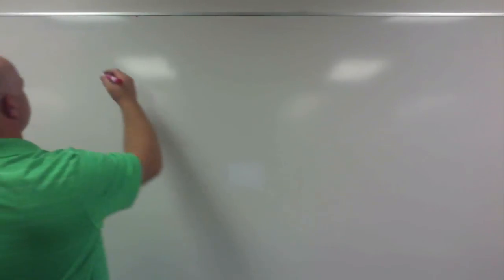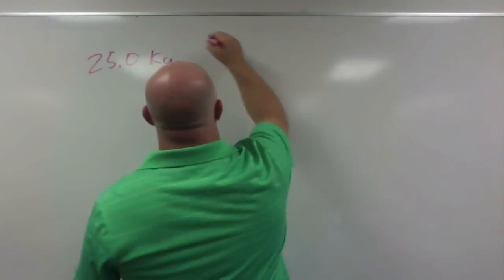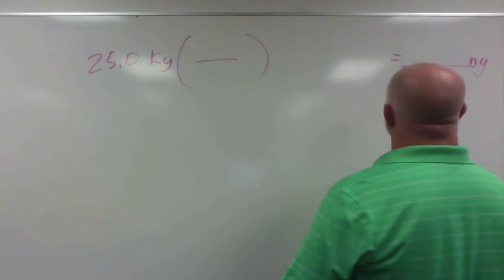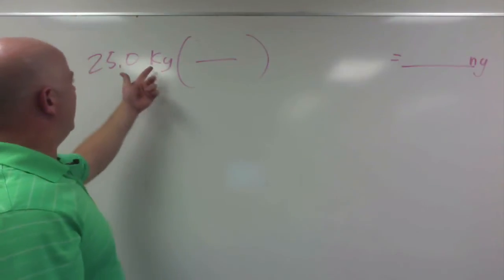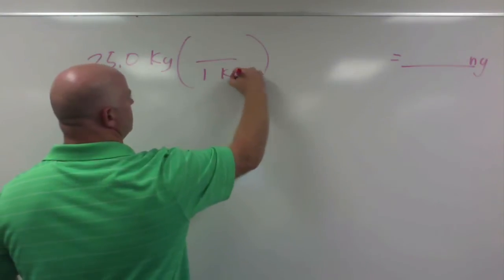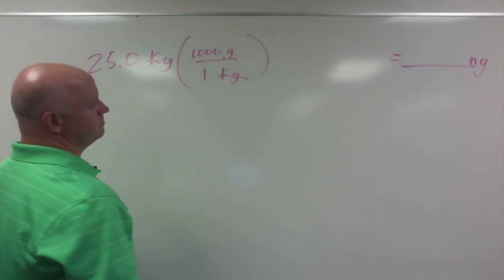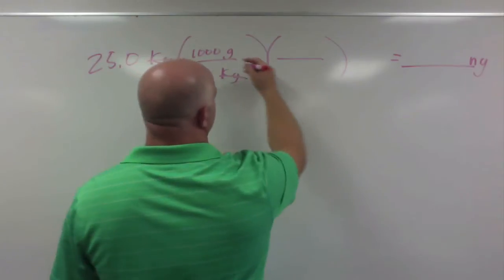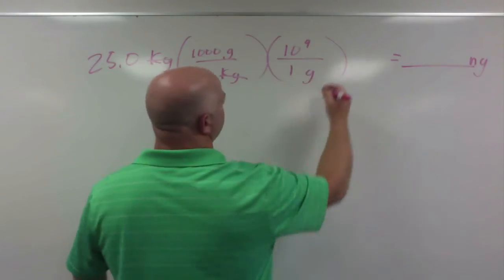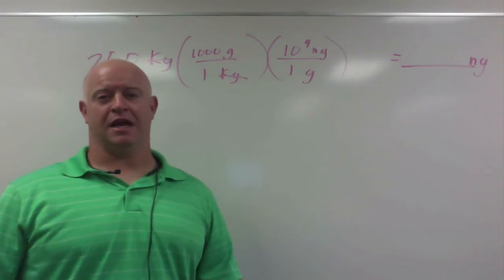So I want 25 kilograms, and I want to convert to nanograms. So my first step is, I know kilograms and grams relationships, so I'm going to use the kilogram to gram relationship. So I know that for every one kilogram, I have a thousand grams. Kilograms cancels, I now have grams. And I know that for every one gram, I have 10 to the ninth power nanograms. This is one of those prefixes that we're supposed to know that nano means nine.